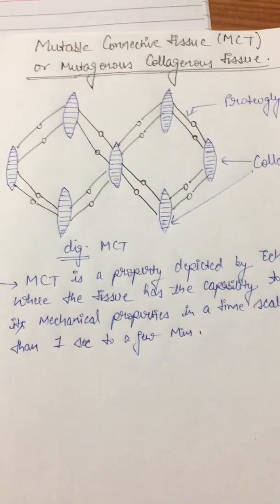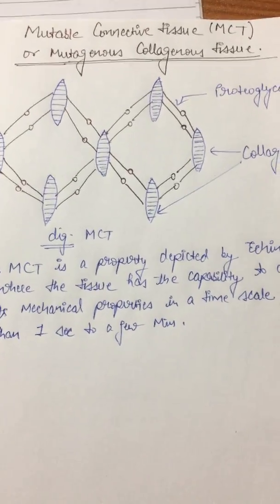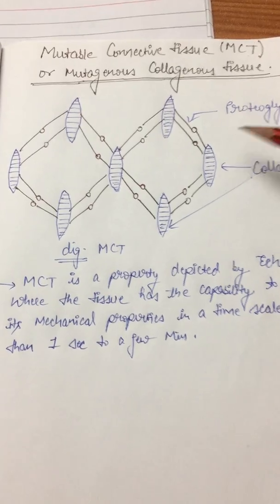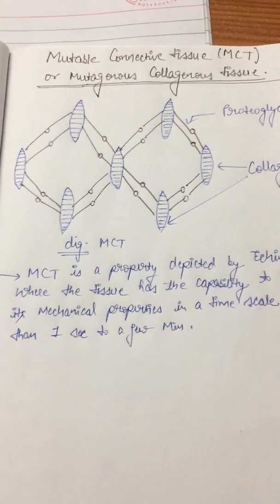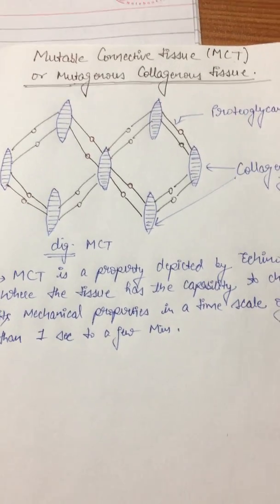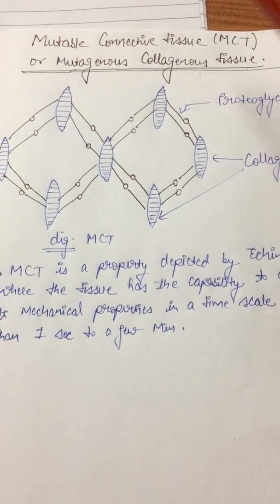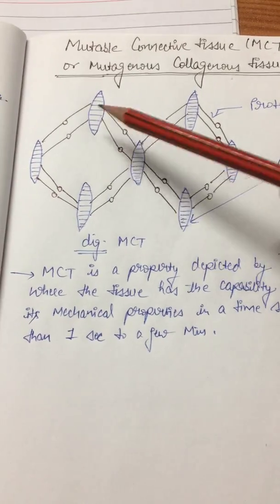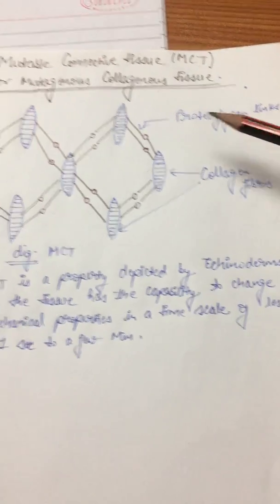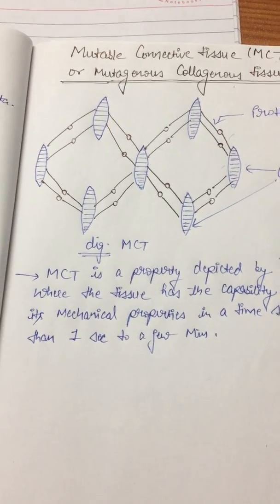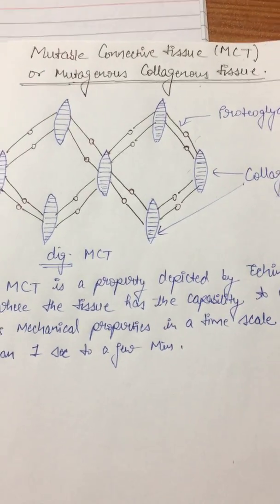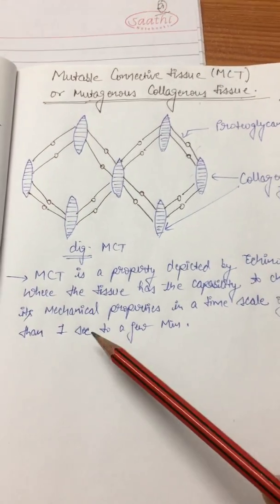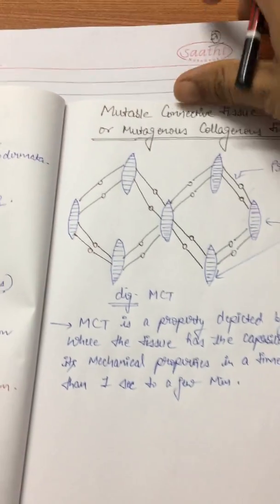One unique feature of Echinodermata they may ask about is the mutable connective tissue. If they ask you to explain what mutable connective tissue is, you must remember this is a unique feature of Echinodermata. They may also ask about mutagenous collagenous tissue, which is the same thing. It is an aggregate of collagen fibers linked by proteoglycans either covalently or non-covalently. Mutable connective tissue is a property in echinoderms where the tissue has the capacity to change its mechanical properties in a time scale of less than one second to a few minutes.